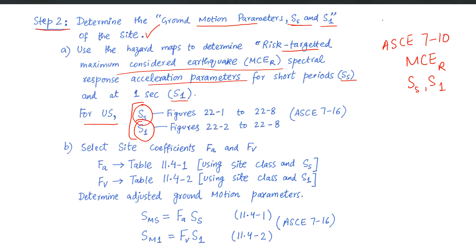Prior to ASCE 7-10, we used to have the simple MCE for Ss and S1. MCE is defined as the earthquake with a return period of 2,475 years, which is also equivalent to a two percent probability of exceedance in 50 years. From ASCE 7-10 onwards, an additional modification is performed on the original MCE values, based on the risk associated with buildings designed at that hazard level. Based on a target risk value of one percent probability of collapse in the next 50 years, the original MCE values are modified by a risk factor to get the MCEr Ss and S1. You need the hazard maps for your study area and from those maps you pick your Ss and S1, conforming to these definitions.